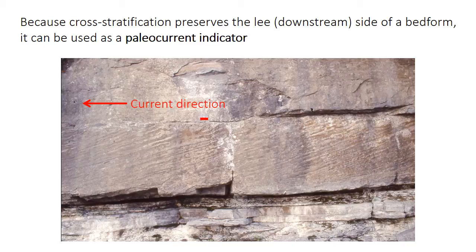Cross-stratification also has another widespread use: indicating the direction of current flow. The inclined layers in these crossbeds are called foreset beds, and as you've seen, they represent the downstream or lee side of the bed form — therefore, these foreset beds dip in the current direction. In this photo they're dipping to the left, so the current flowed approximately from right to left. It's important to view cross-stratification in three dimensions to accurately determine the dip direction. This example is also from a dune — the small red bar is a 10-centimeter scale bar — though this one is actually from a shallow marine environment, not a river.